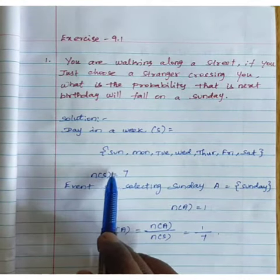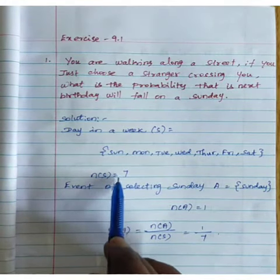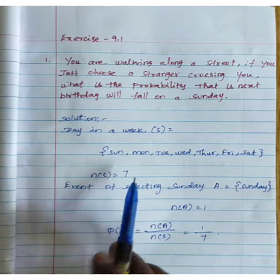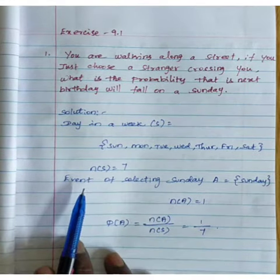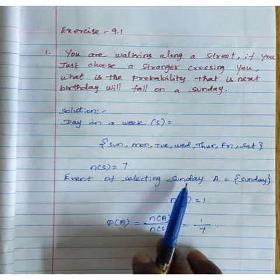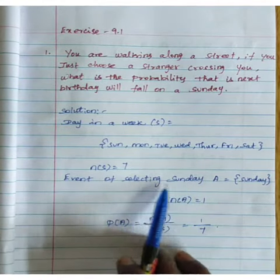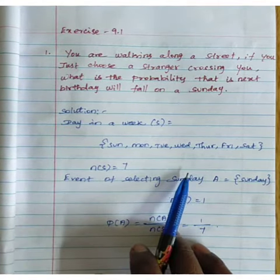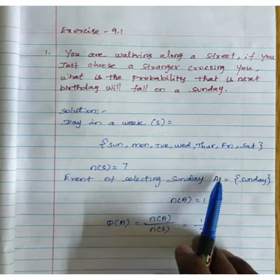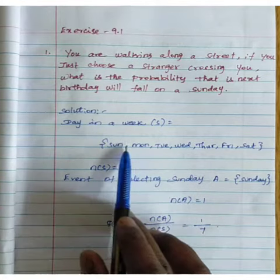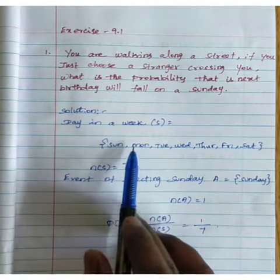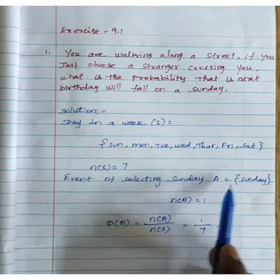If you go to a street, you will see 7. The event of selecting is Sunday. The first day is Sunday. How many days are there? One Sunday is there.